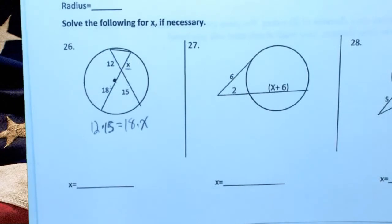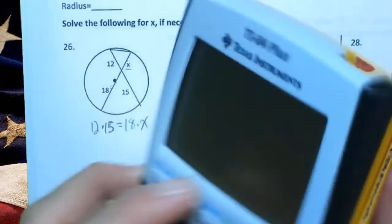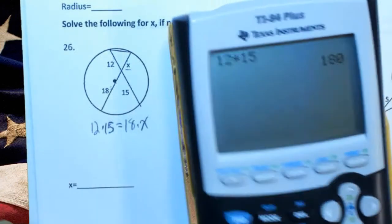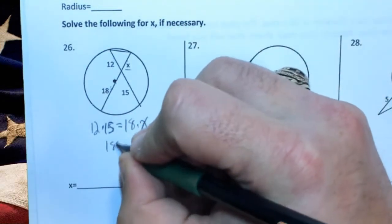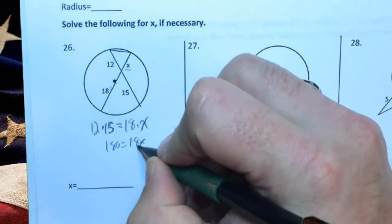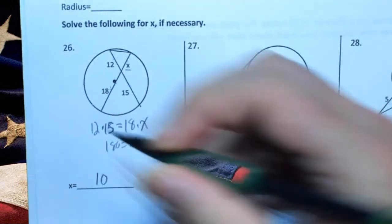So now 12 times 15, not one that I can do in my head. 12 times 15 is 180 equals 18x, and now I can do that one in my head. Divide it by 18, and I get x equals 10.